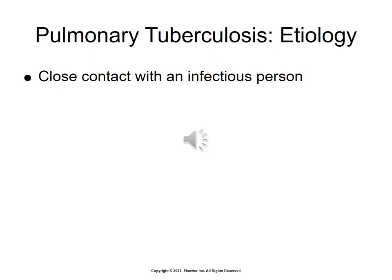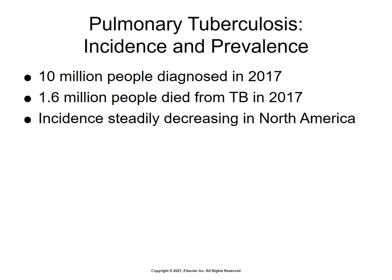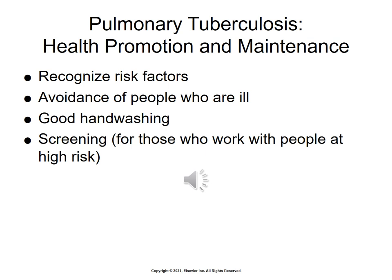The risk for infection transmission is reduced significantly after an adult with active TB has received proper drug therapy for two to three weeks and has experienced clinical improvement. In North America, adults at greatest risk for development of TB include those in constant frequent contact with an untreated infected person, those with reduced immunity or current HIV infection, adults living in crowded areas such as long-term care facilities or homeless shelters, older homeless adults, injection drug or alcohol users, lower socioeconomic status, and foreign immigrants from less affluent countries.